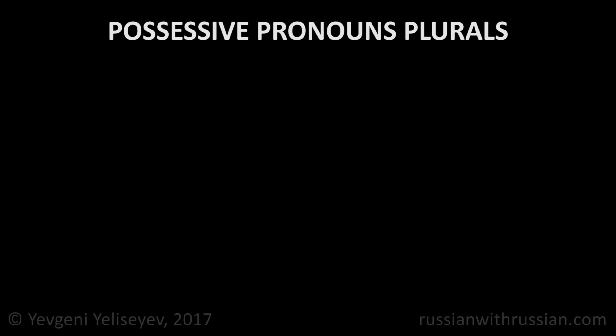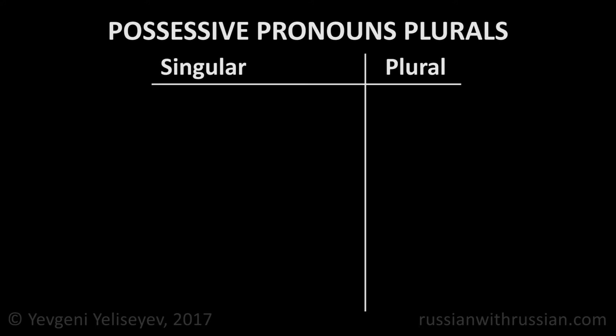First of all, let's learn the plural forms of the possessive pronouns. The plural form for мой, моя, and моё is мои, regardless of the noun gender. Мои.